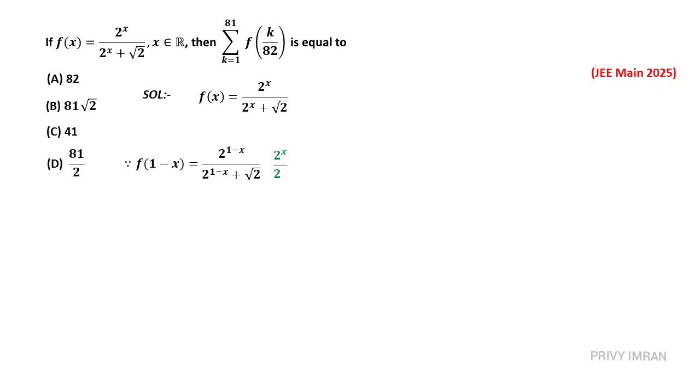Now multiply and divide by 2^x. In my function f(1-x), let me take √2 common from numerator and denominator. Then f(1-x) will be equal to √2 / (√2 + 2^x).